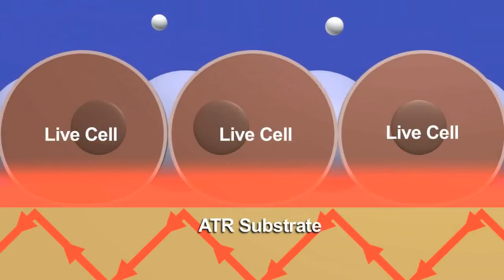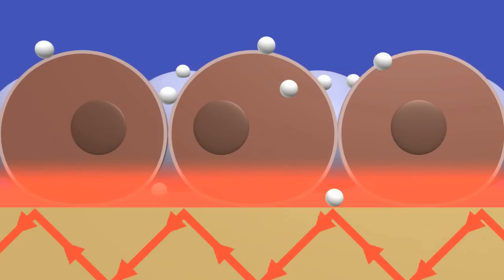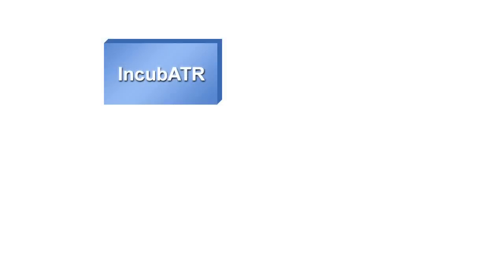Step two: introduce stimuli, for example, a growth agent, tumor promoter, or nanoparticles, into the cell medium inside the incubator. Step three: connect to an FTIR and collect ATR-FTIR data measurements to account for changing live cell dynamics.